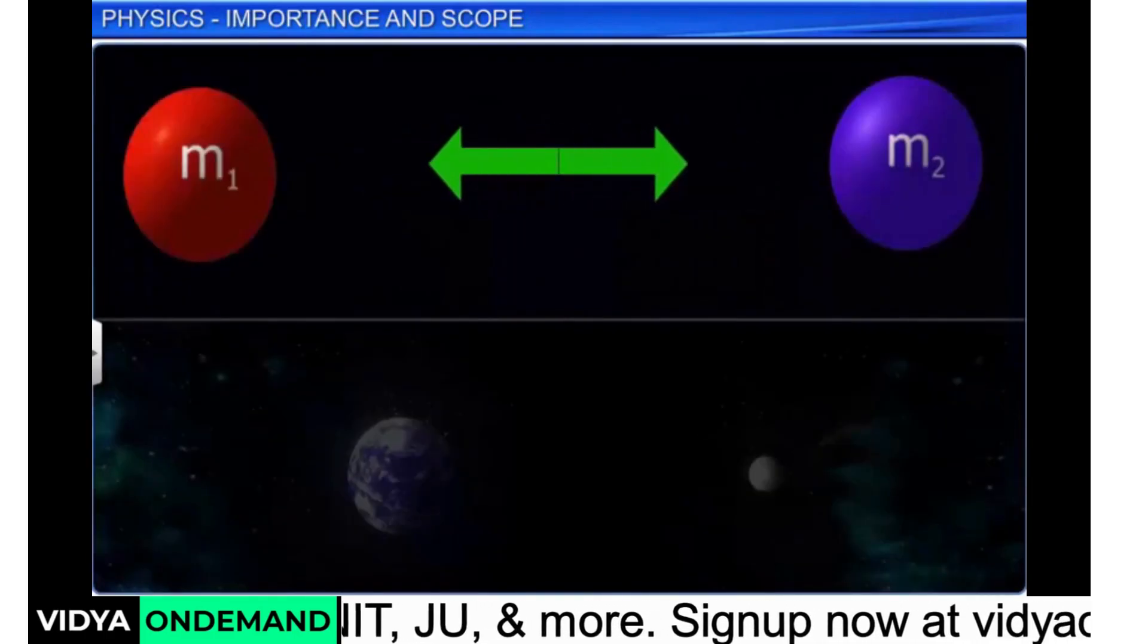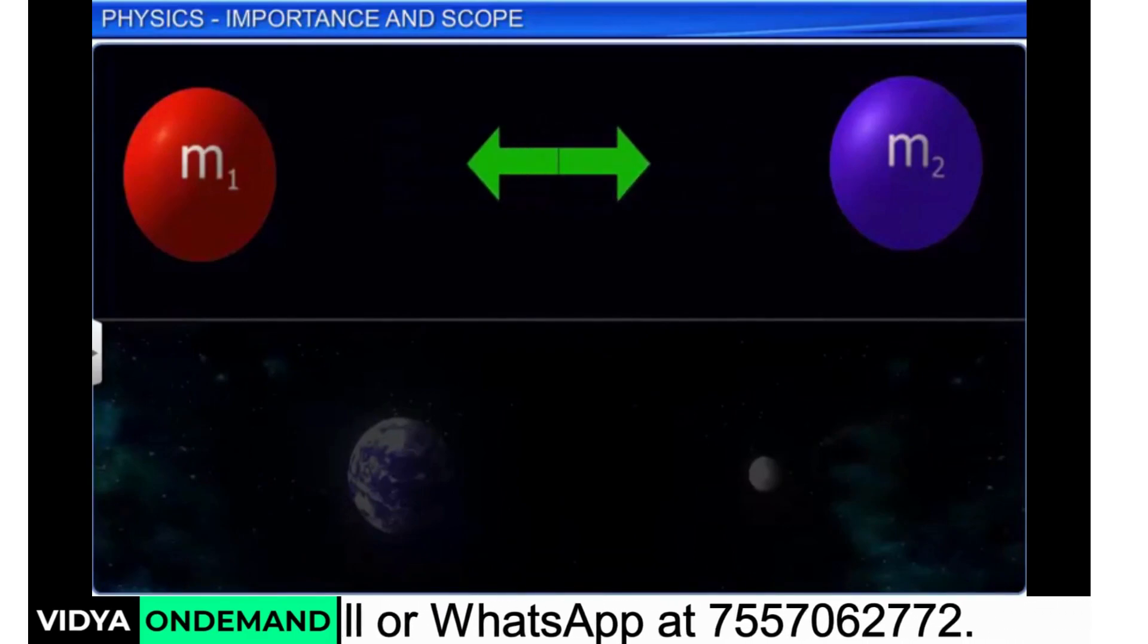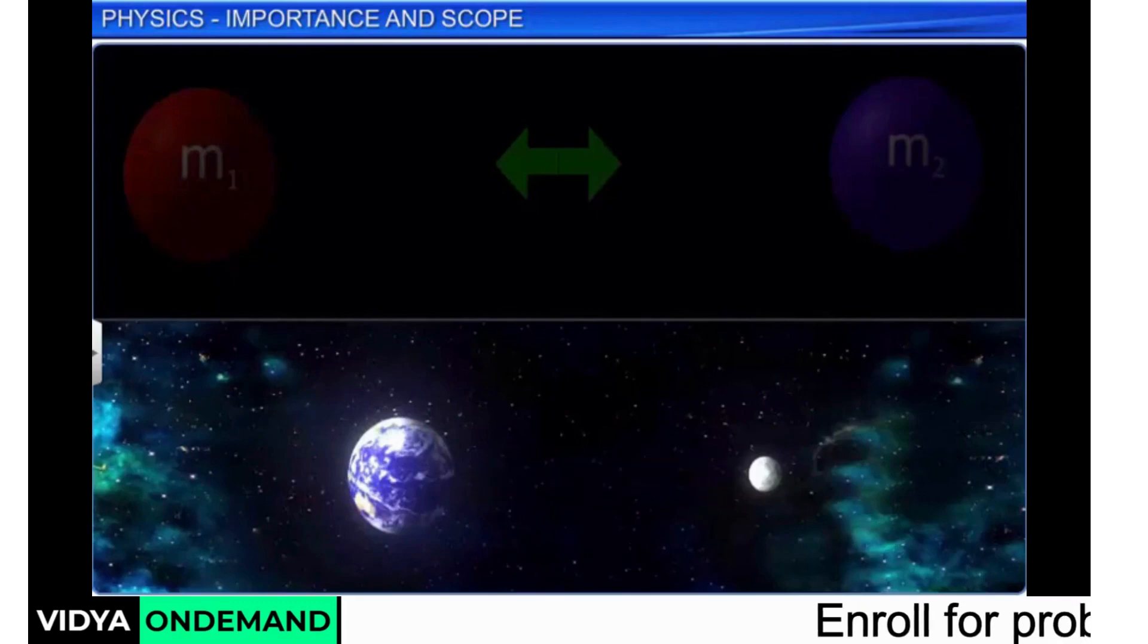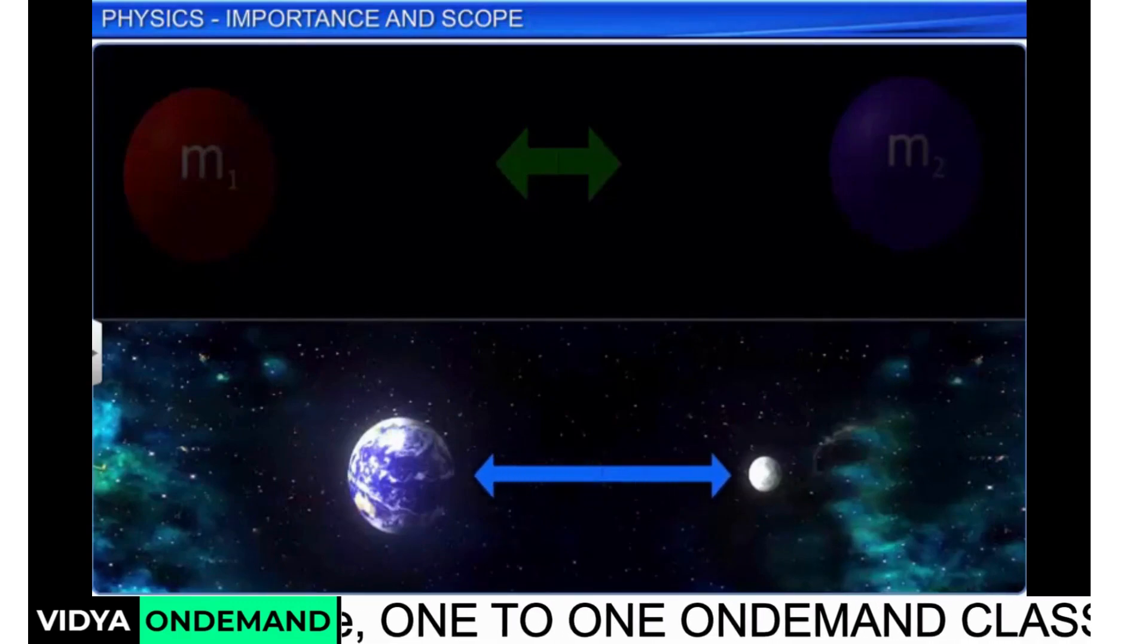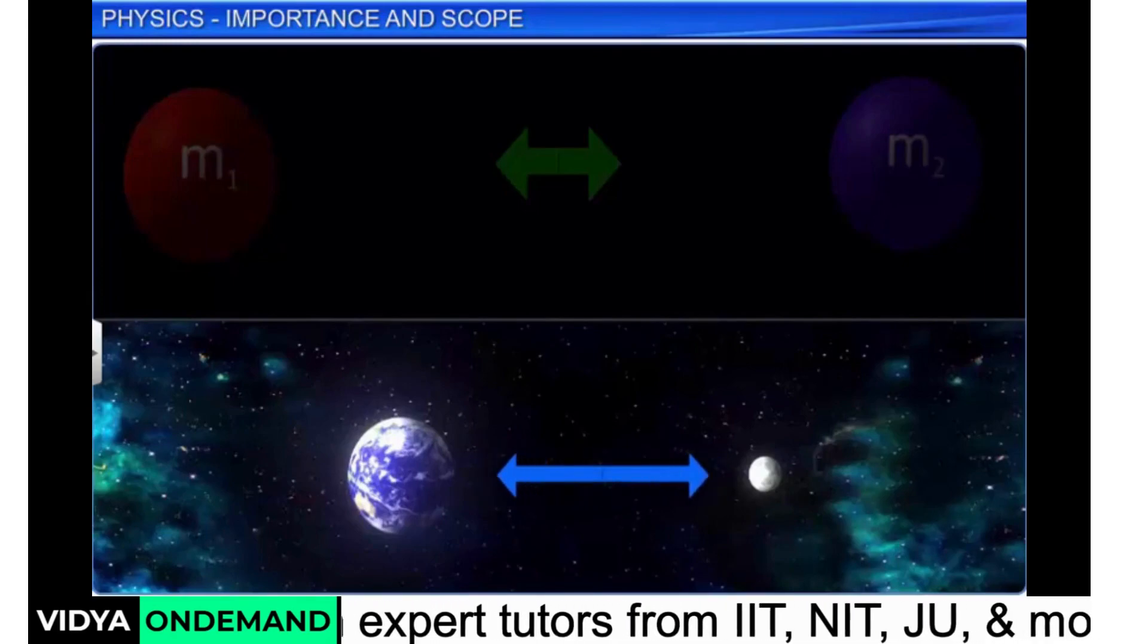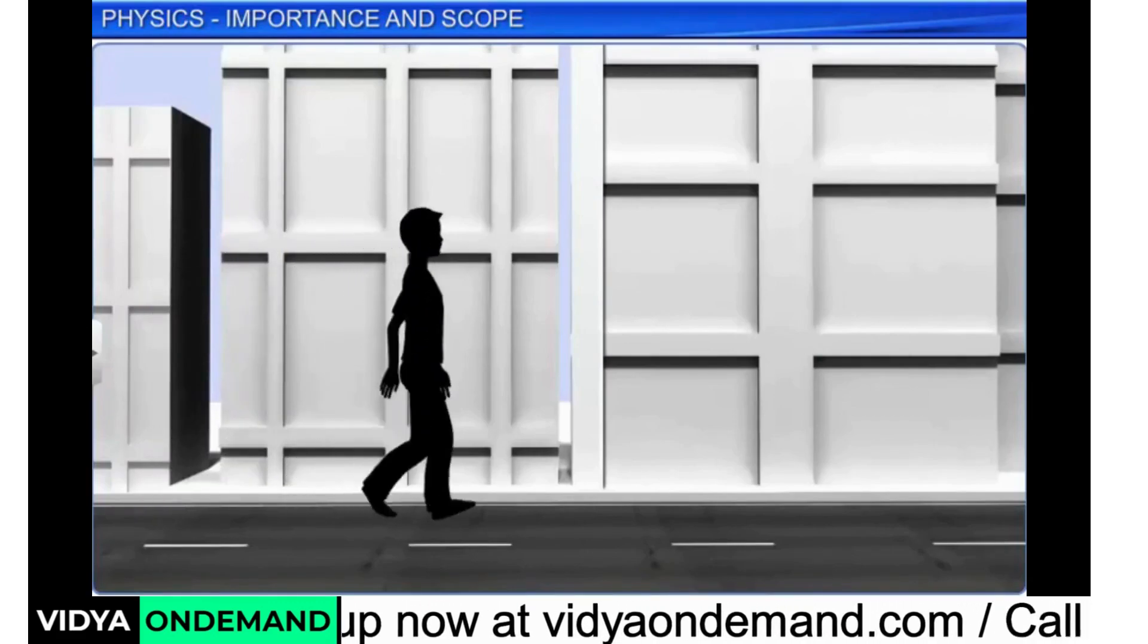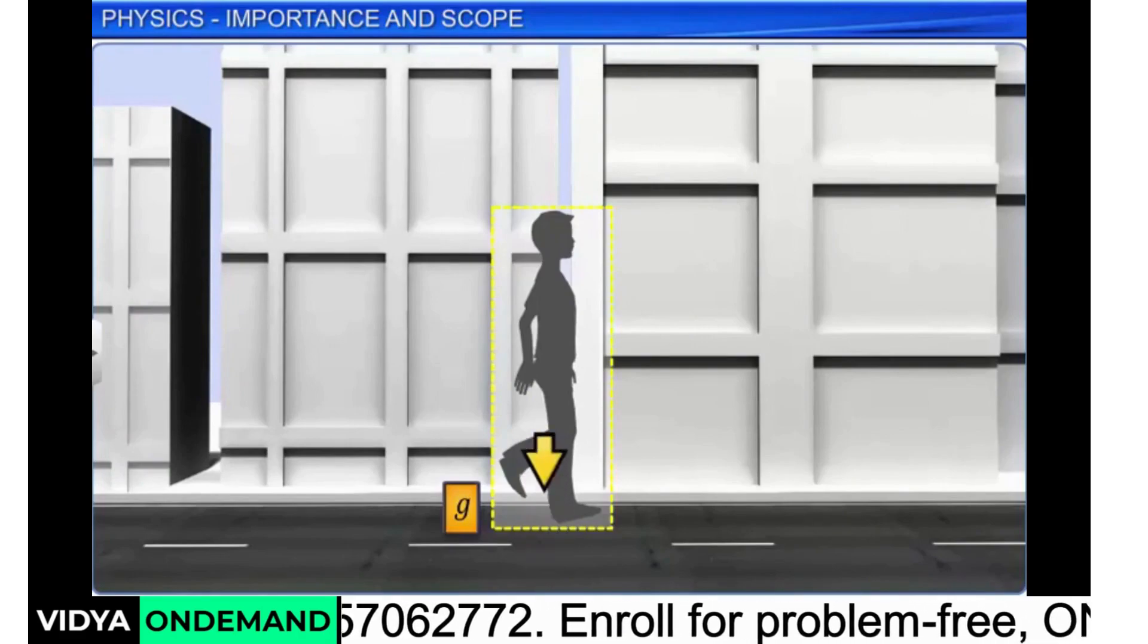The gravitational force is the force of mutual attraction between any two objects by virtue of their masses. It is a universal force meaning all objects in the universe exert a gravitational force on each other. We are able to stand or walk due to Earth's gravitational force exerted on us by the Earth.